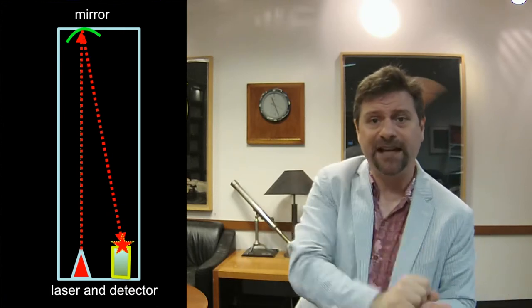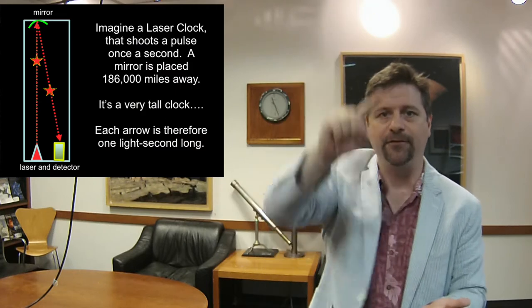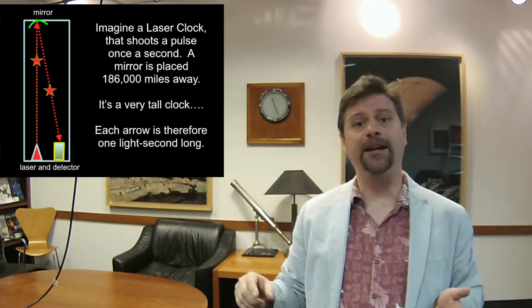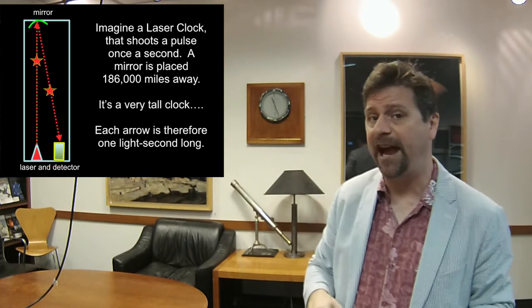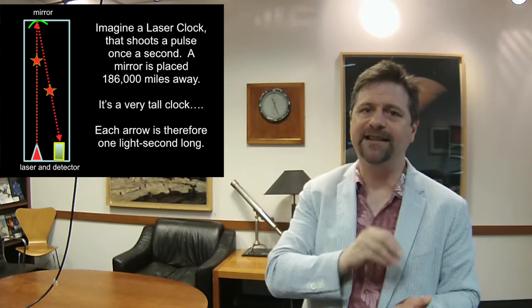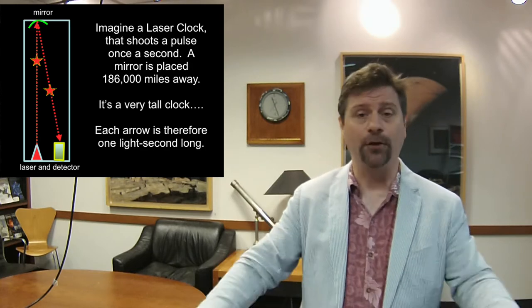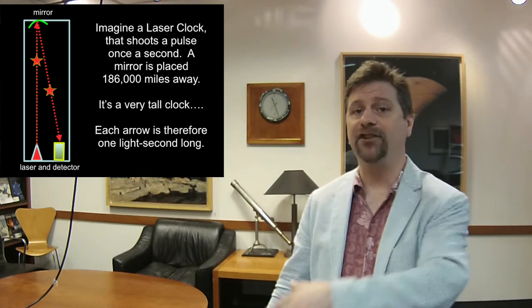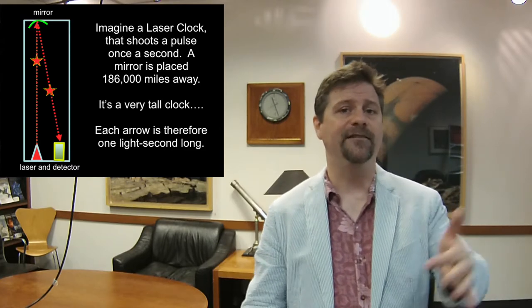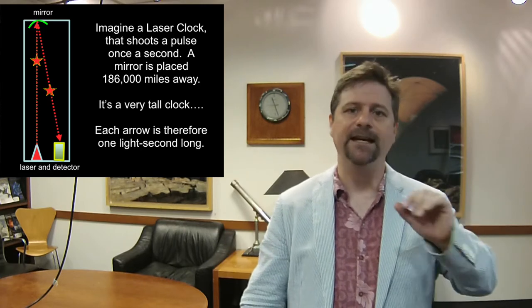That flash moves straight up the column, reflects off a mirror at the top, and comes all the way back down — I'll call that a light clock. It only flashes again when it gets the response from the previous flash. The flash of light inside the clock moves at the speed of light according to everyone — not just me, but to everyone. No matter who measures it, it always goes at the speed of light.